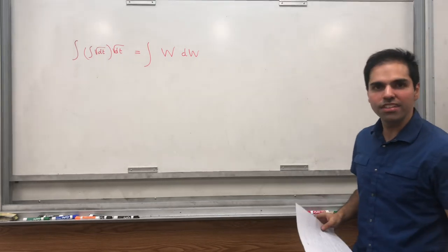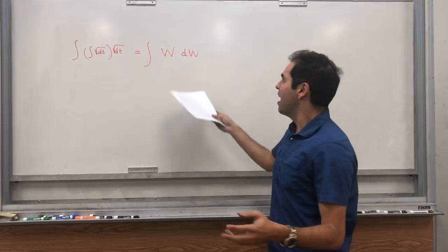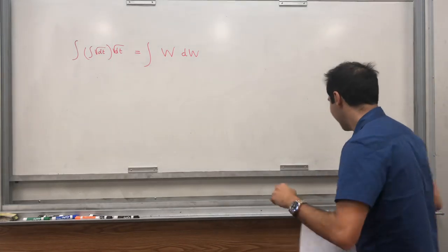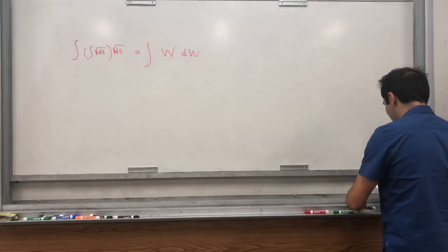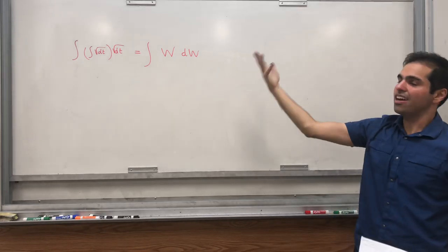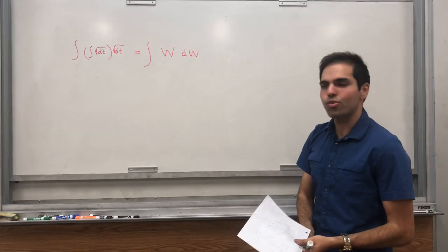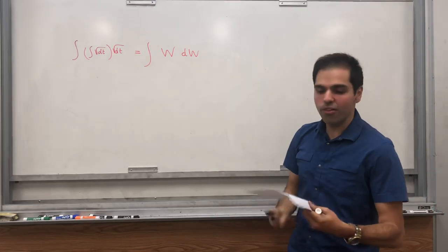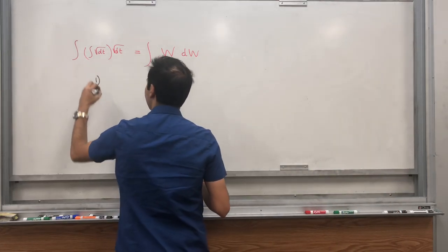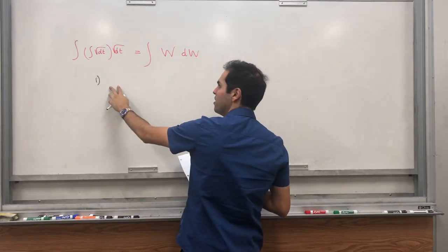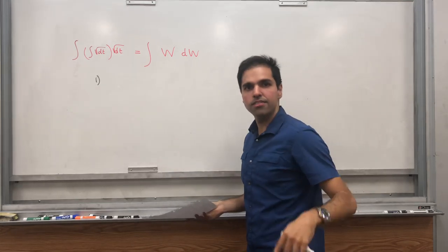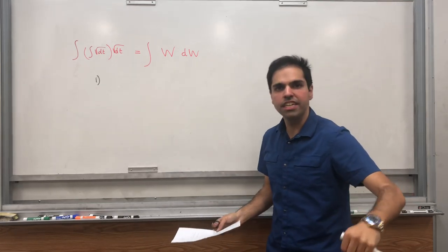And if you watched my previous videos, that's just a proof of the second fact that I wrote down. Now, what is w? It's, as I said, a correct analog of square root of dt, and that's Brownian motion. So in case you need a reminder, what is Brownian motion? It's some stochastic process, which means for every t, you get a random path with the following properties.